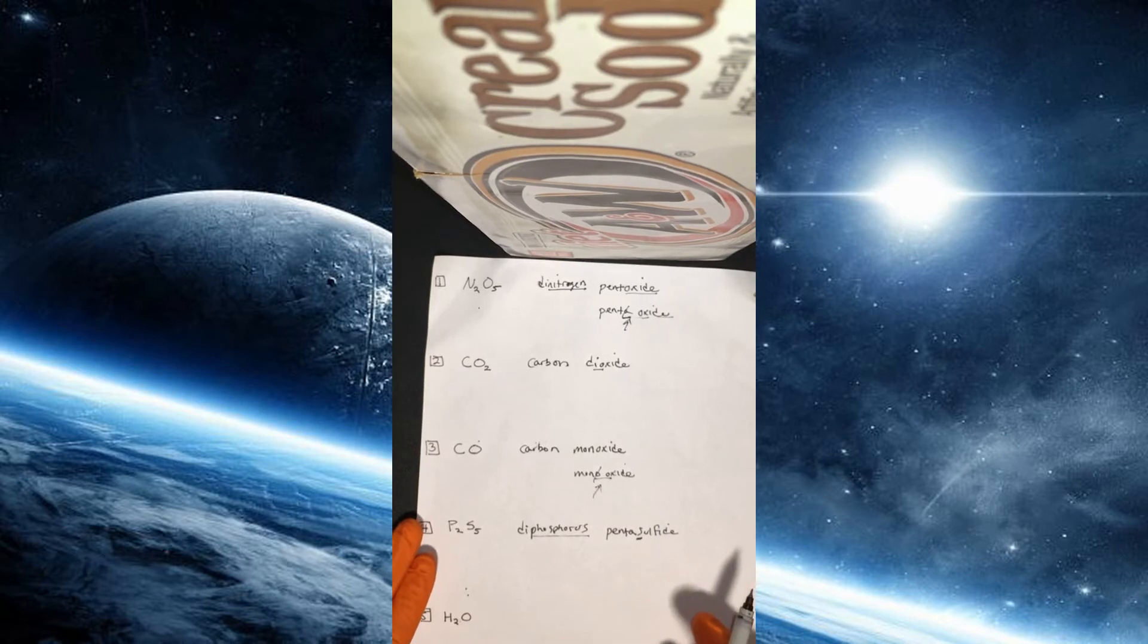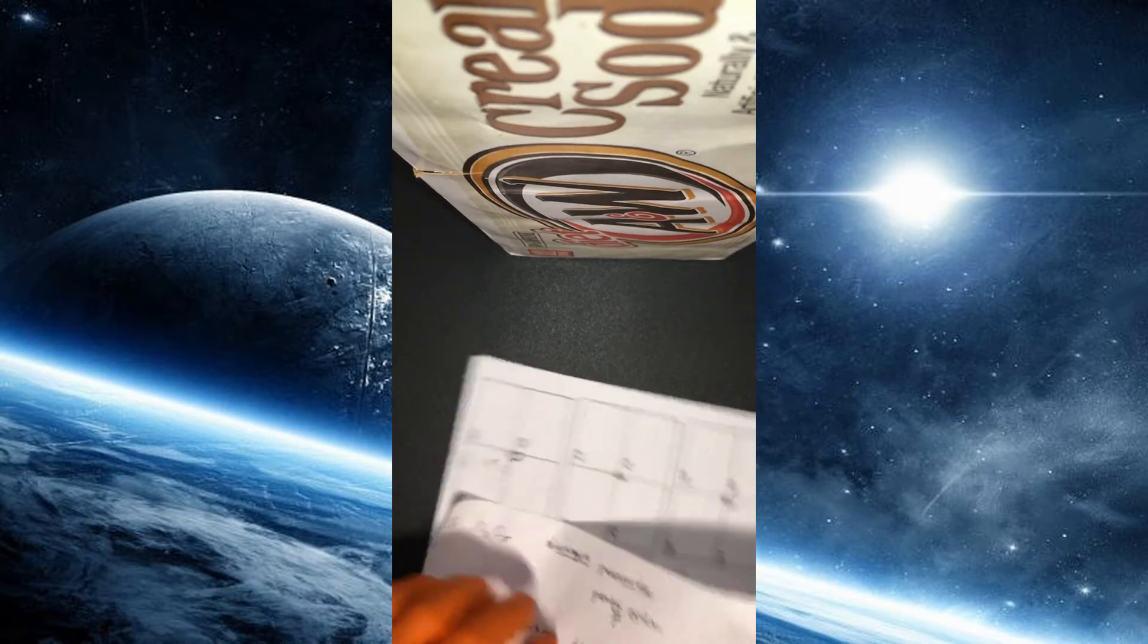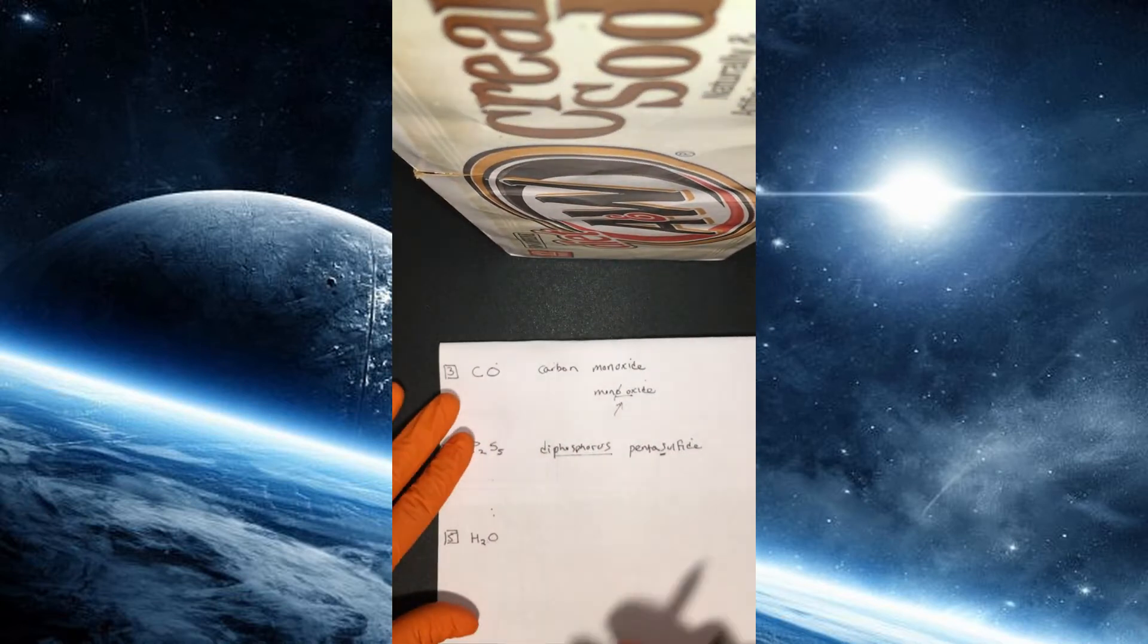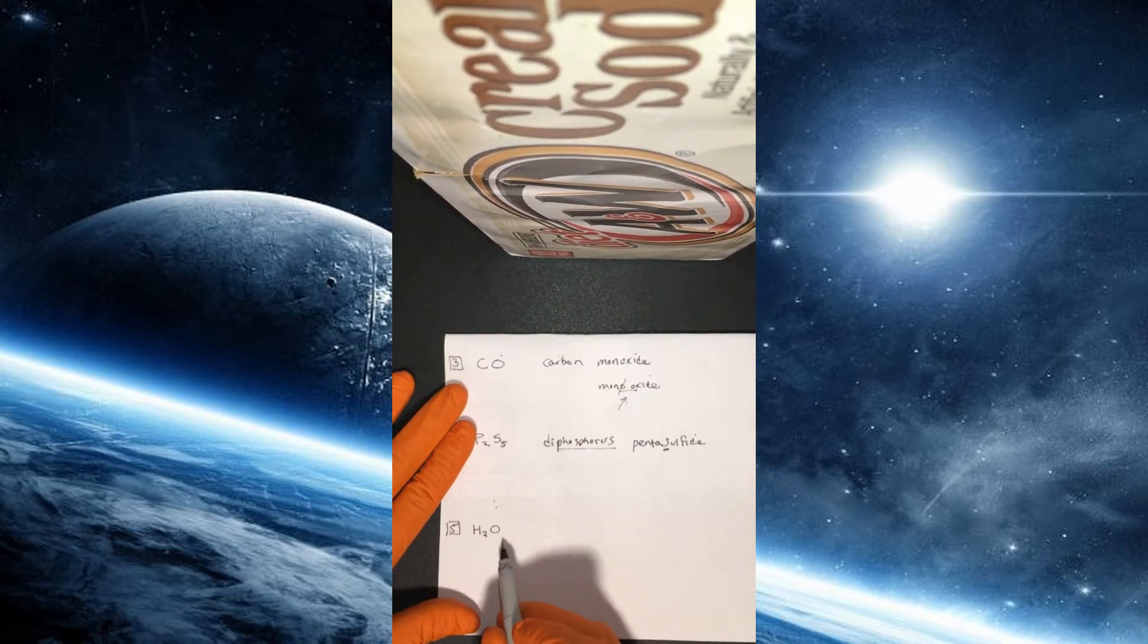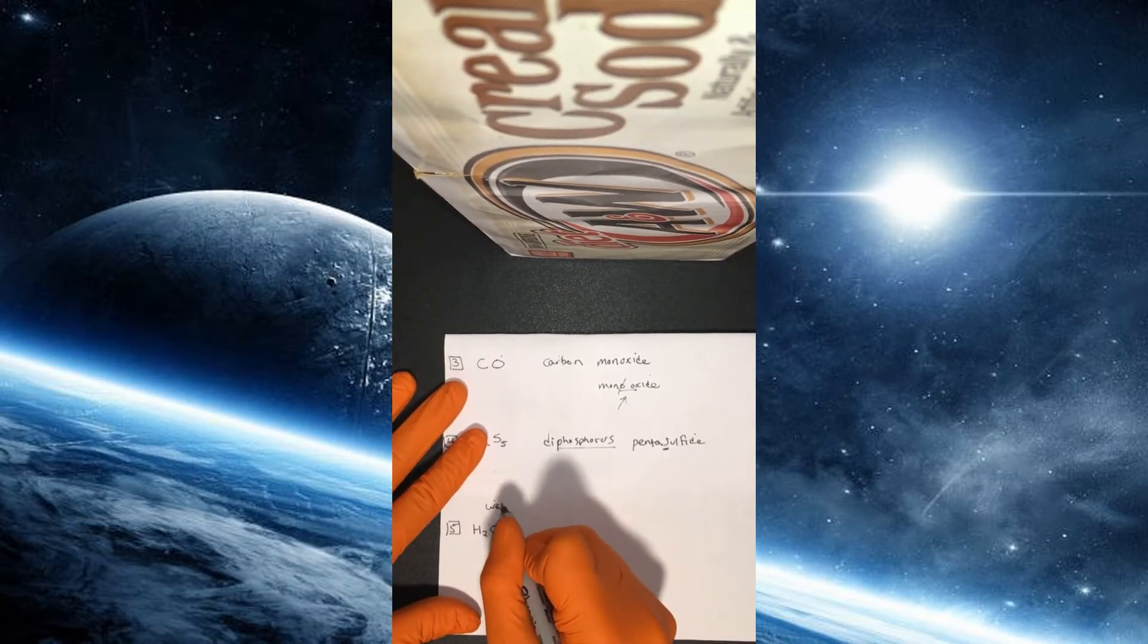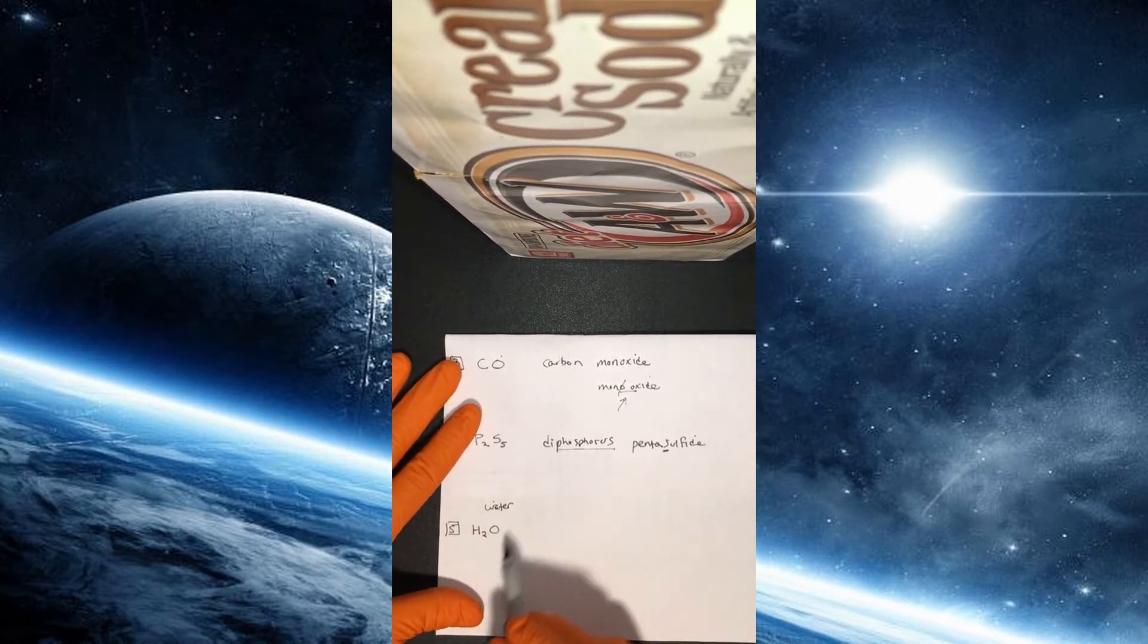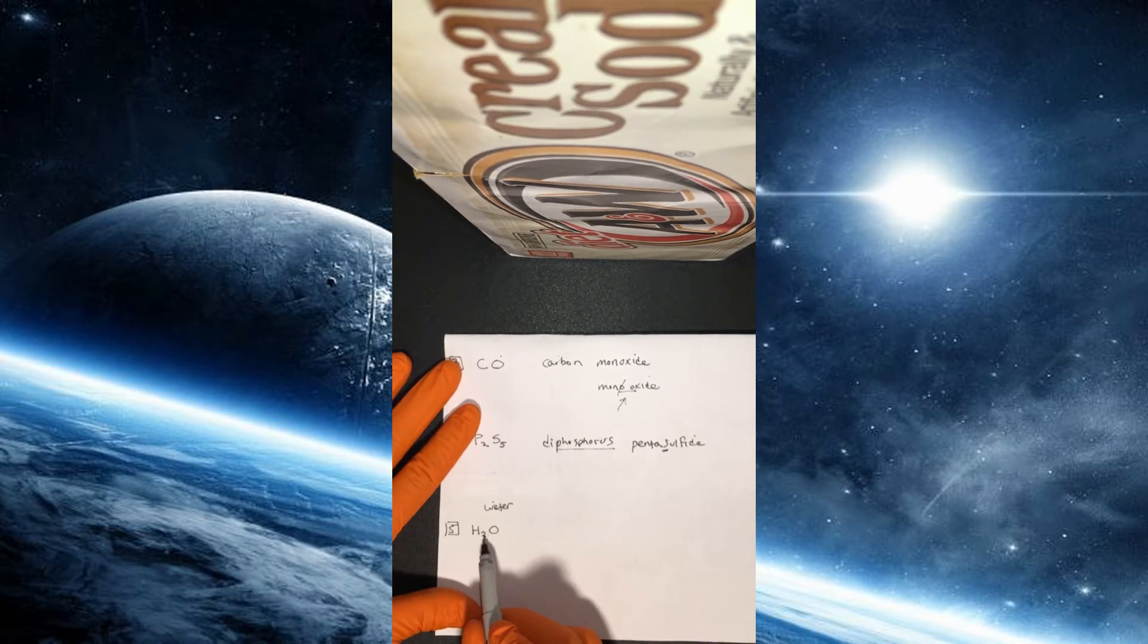And now let's look at the very last one. So let me actually kind of fold this so we can see a little bit better. It's in the screen. All right, so here we just have H2O. Now this is clearly water. But if we want to name it according to these binary rules, we need to follow what we did up here. So we have two atoms of hydrogen and one atom of oxygen.